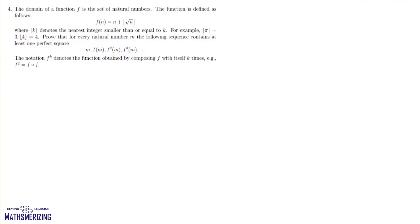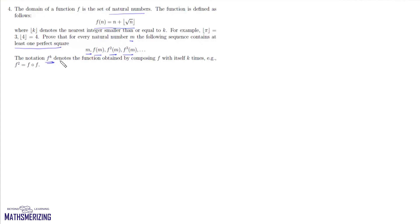The fourth question gives us a function f whose domain is the set of natural numbers, defined as f(n) = n + floor(√n). We need to prove that for every natural number m, the sequence m, f(m), f²(m), f³(m), ... contains at least one perfect square, where the notation f^k denotes the composition of f with itself k times.